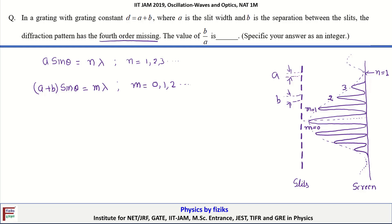In this question, it is already mentioned that the fourth order interference maxima is missing. It is only possible if the fourth order interference maxima lies at the same angle where the first minima of the diffraction lies.